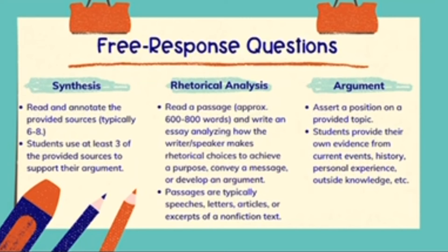For a synthesis essay, you're given a topic and you need to take a stance or assert a position on that topic — choose a side. Then you're going to use at least three sources (typically about six to eight are provided) to support your argument. The sources can be in favor of your position, or you could even use a source or two to argue against and set up a counterclaim and rebuttal. To synthesize basically means to take different parts and put them together — kind of like a recipe. You have your own argument and you're using the sources to support it. This is a useful skill because regardless of your college major, chances are you'll have to write a research paper and use other people's research to support your own.